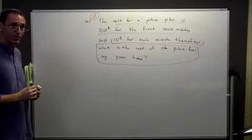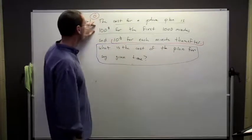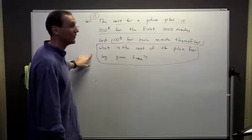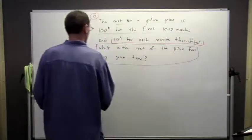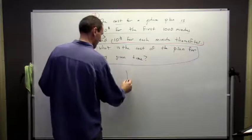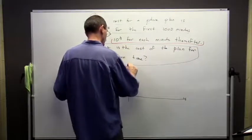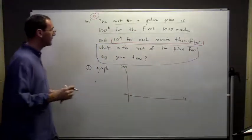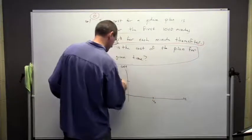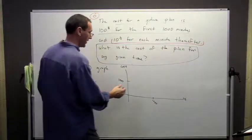Step zero is to go through, read this, parse it, and figure out the important things: we've got the cost for the first 1,000 minutes and the cost for each minute after that. The question is what's the cost for any given time. The next step is to graph this. The cost is going to be a function of time — for the first 1,000 minutes, the cost is going to be $100.